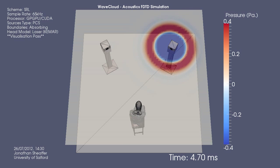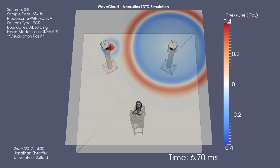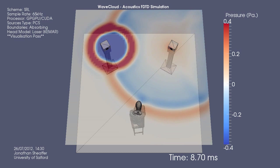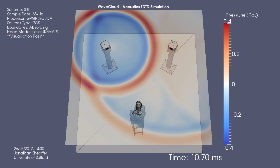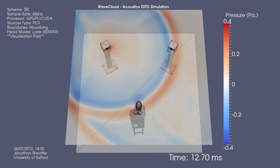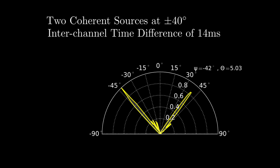At higher time delays, the effect of the lagging source is no longer suppressed, and high correlation is shown at two distinct locations. This is equivalent to the perception of acoustic echo, where the two sources are no longer perceptually fused.